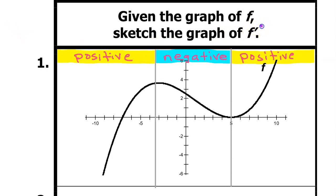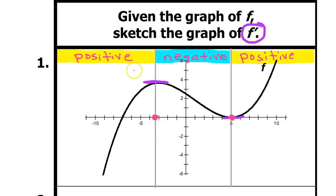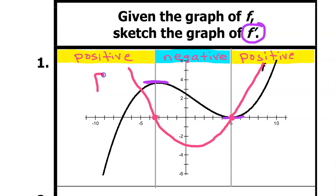As we prepare to sketch the graph of f prime, remember that f prime is the slope of function f. Study the graph of function f looking for horizontal tangent lines — we'll have a horizontal tangent line here and here. At these x values the slope is 0, so f prime will be 0 here and here, and the graph of f prime should pass through these points. Because it is positive in the first interval we will start above the x-axis, go from positive to negative while passing through the first zero point, then pass through the second point and become positive again.